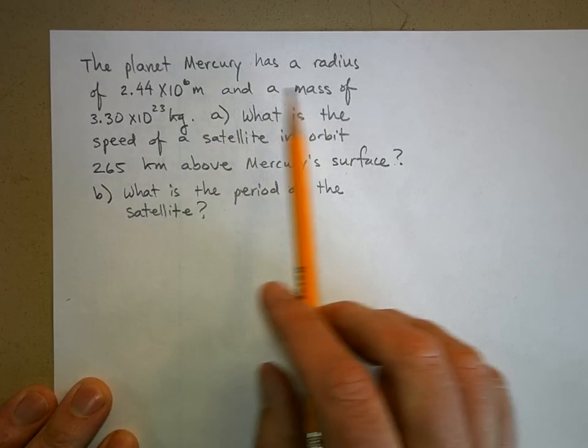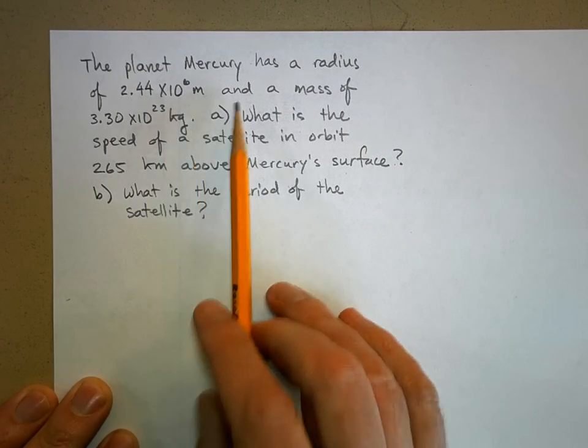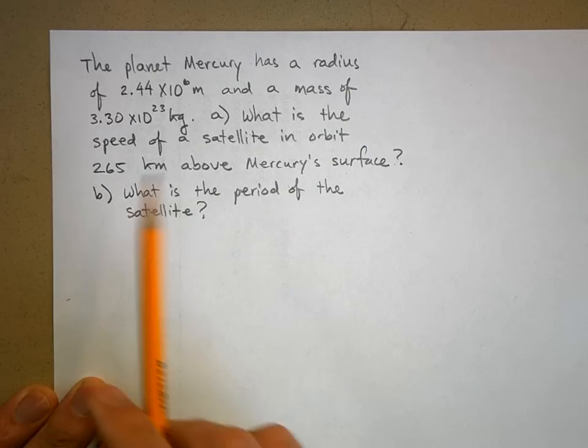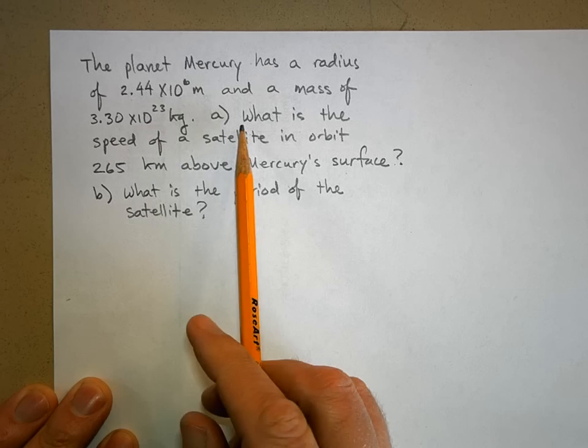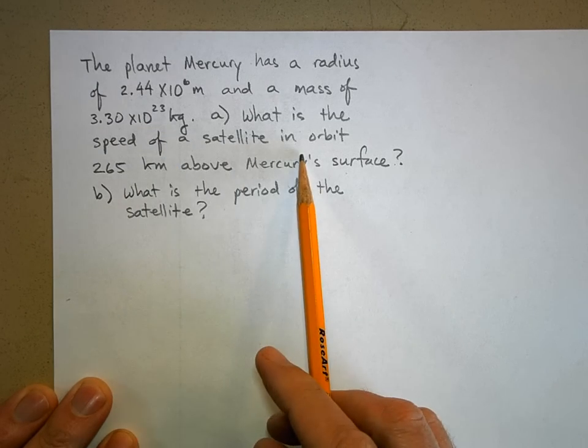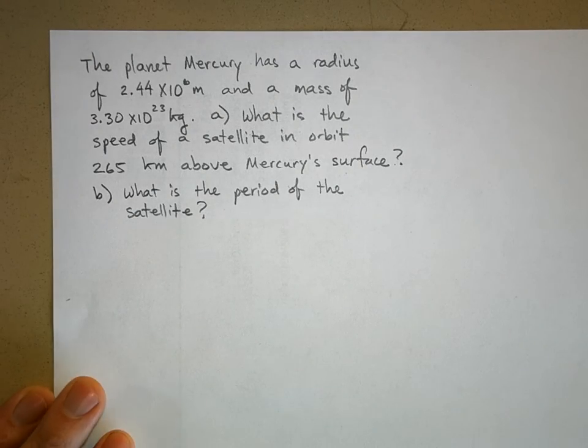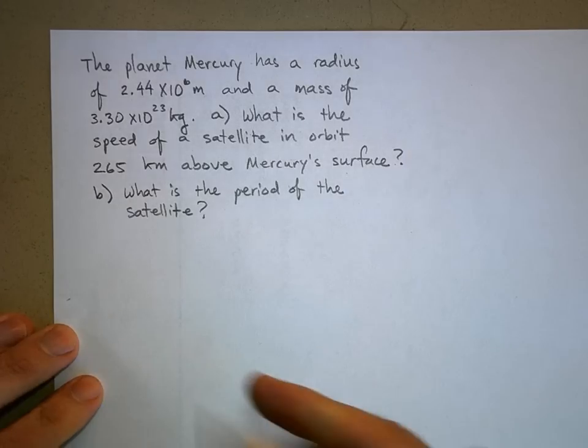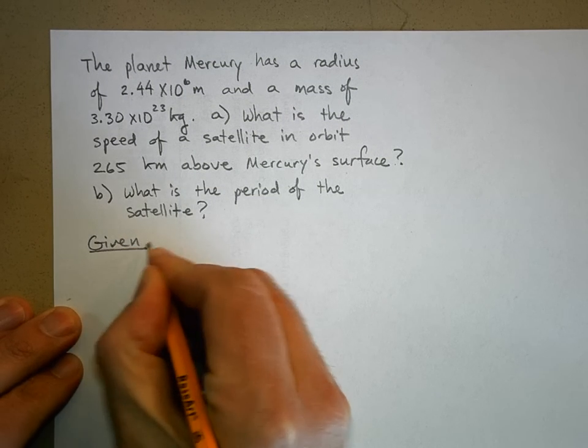The problem is: the planet Mercury has a radius of 2.44 times 10 to the 6 meters and a mass of 3.30 times 10 to the 23 kilograms. Part a: what is the speed of a satellite in orbit 265 kilometers above Mercury's surface? Part b: what is the period of the satellite? So let's do this, let's just do given.